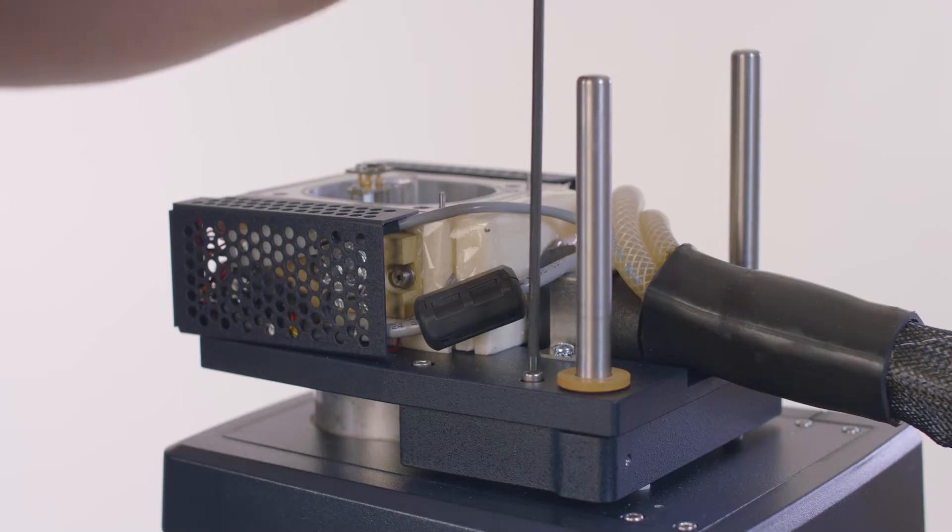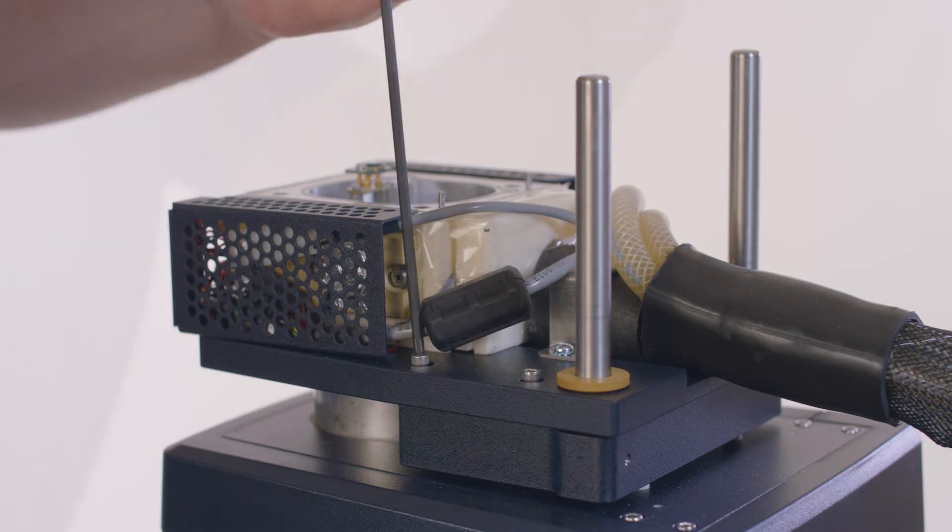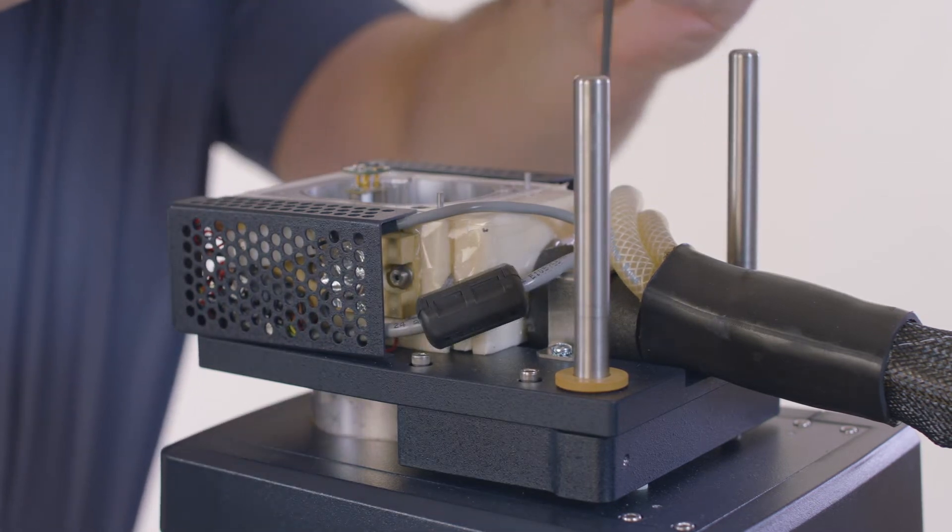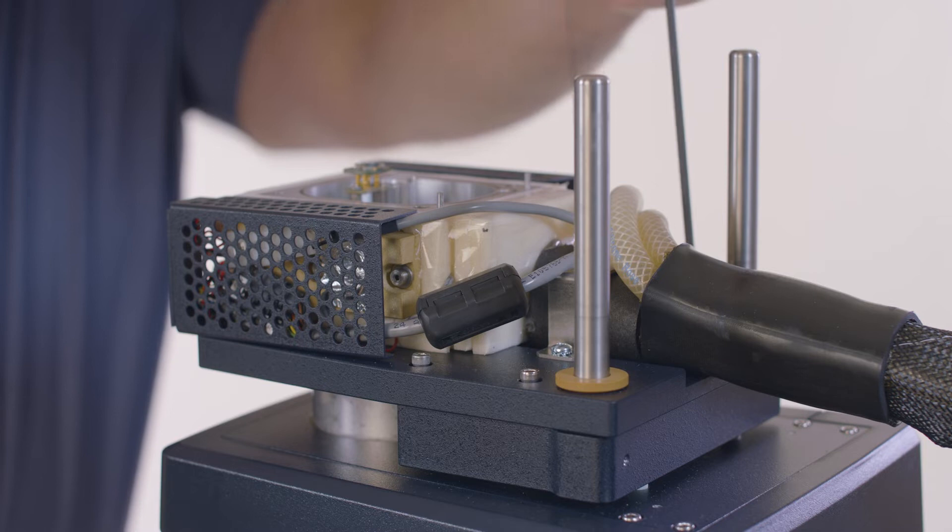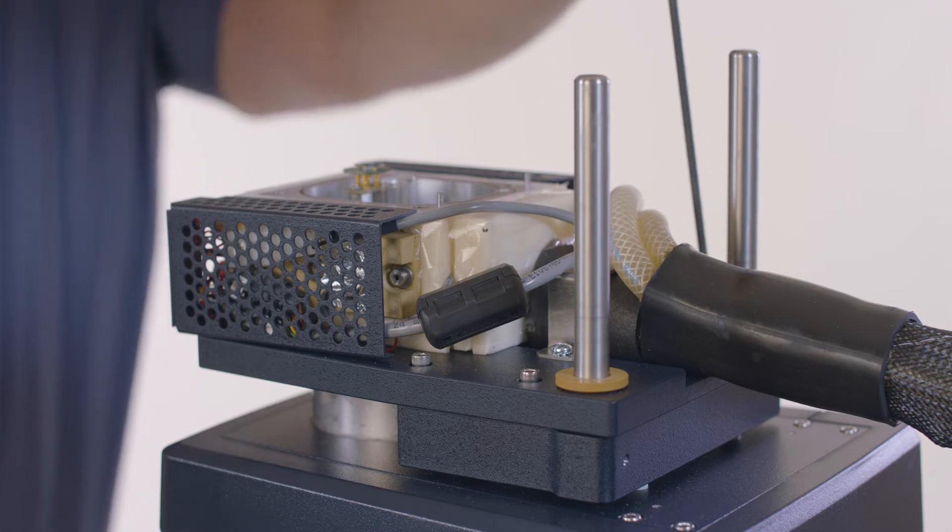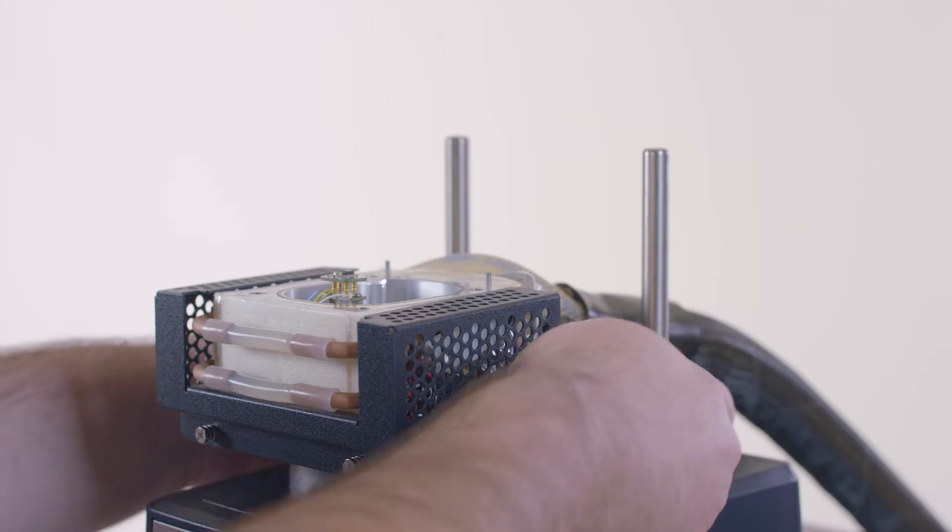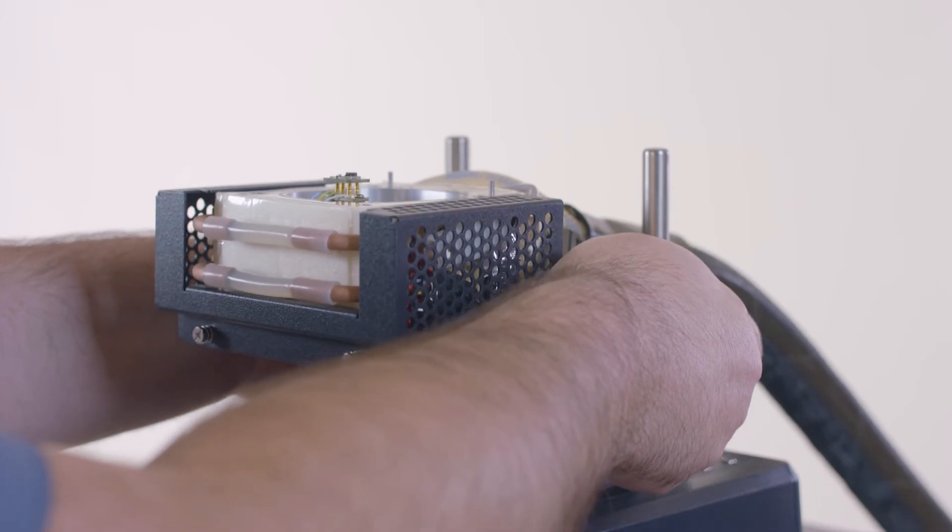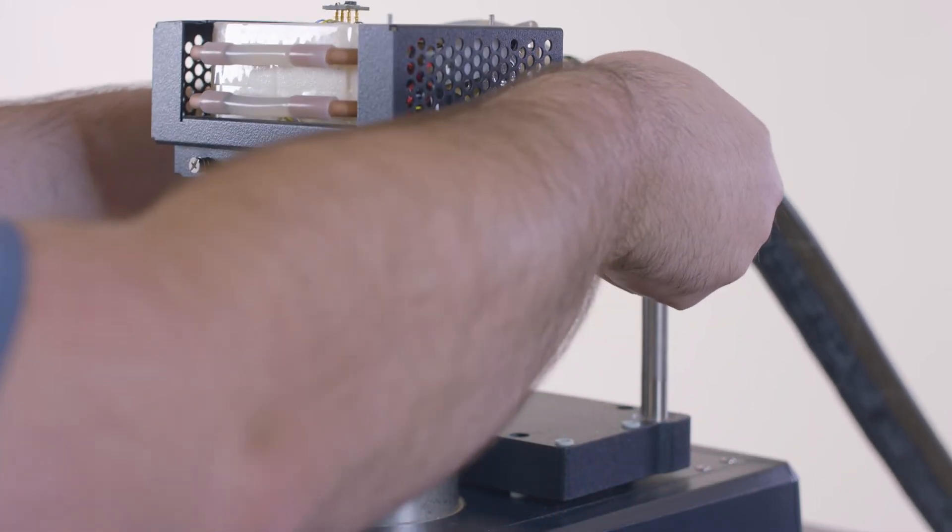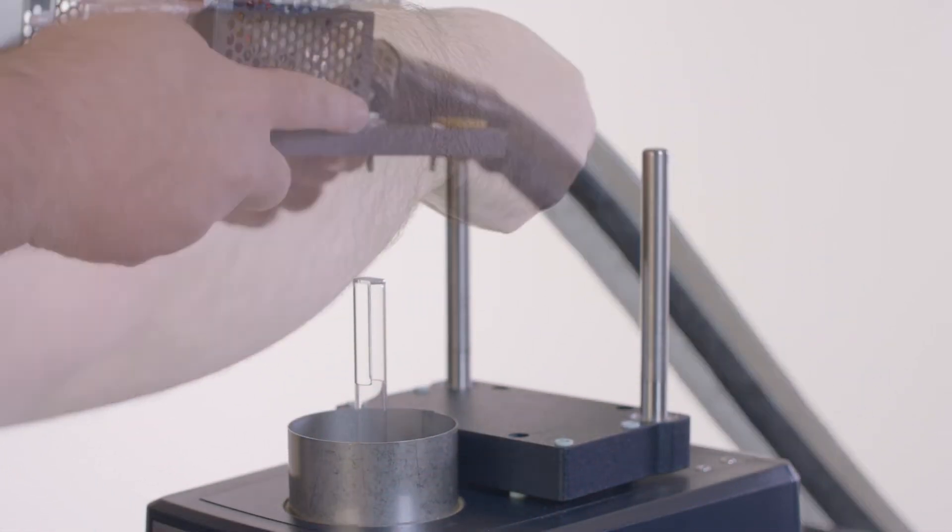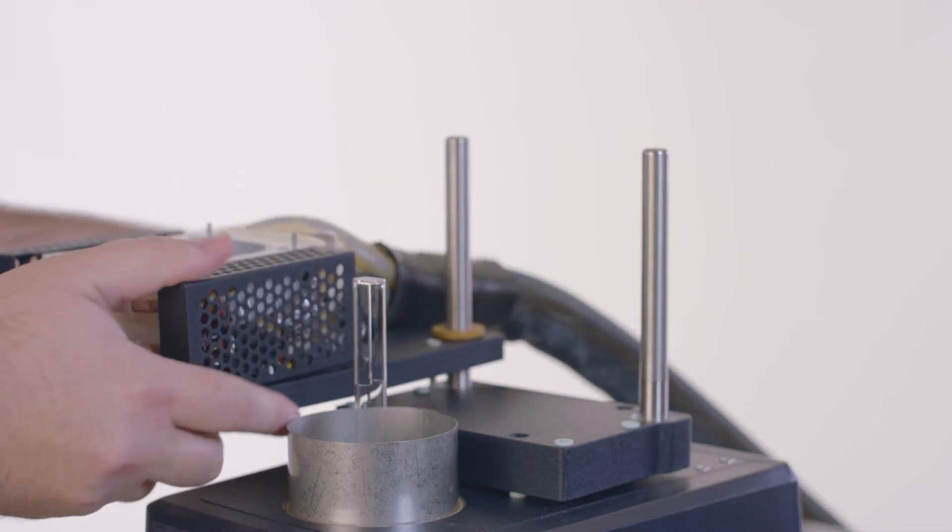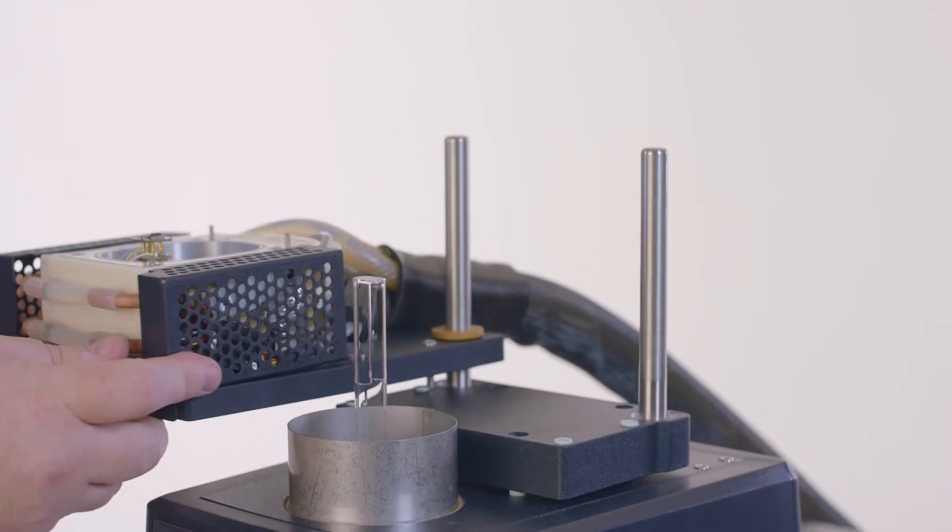Using the 9/64th inch hex wrench provided, loosen the four sample chamber mounting screws. Carefully guide the sample chamber up and off the guide rods. Slide the chamber down onto one guide rod and rotate it away from the stage and probe assembly.